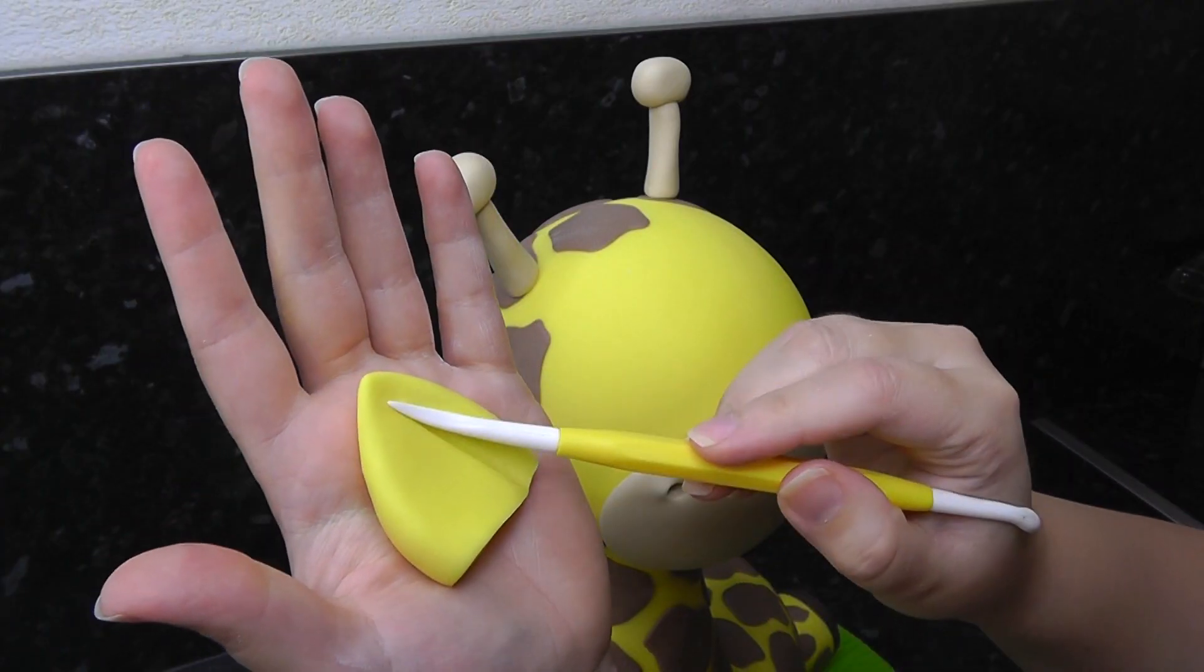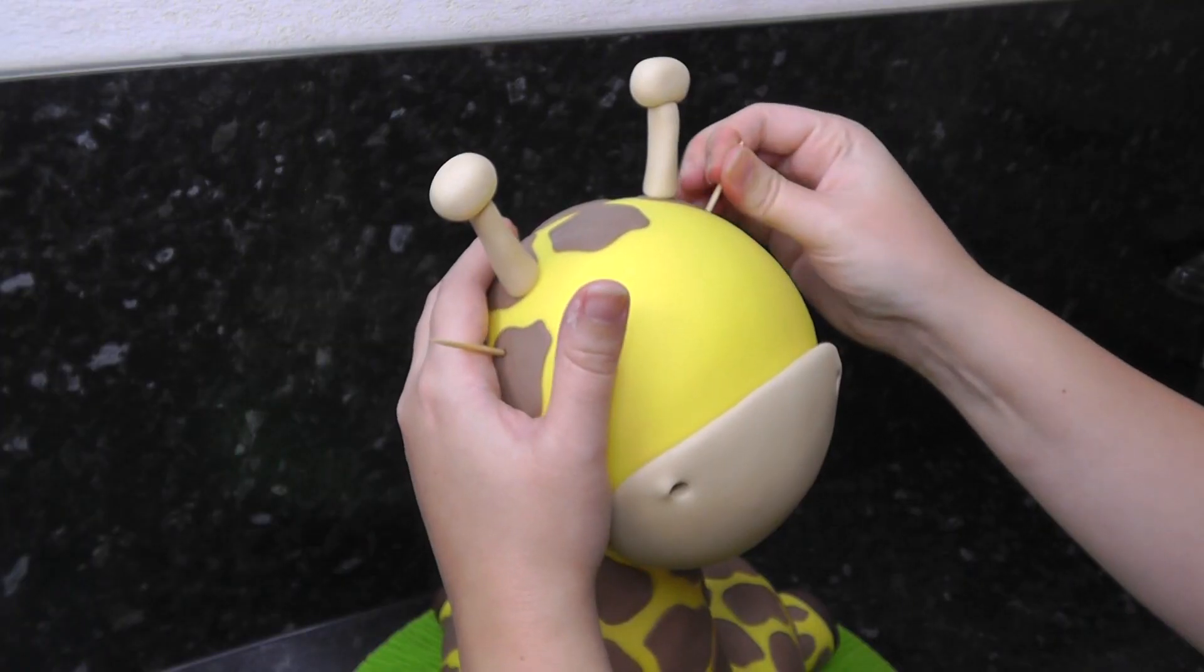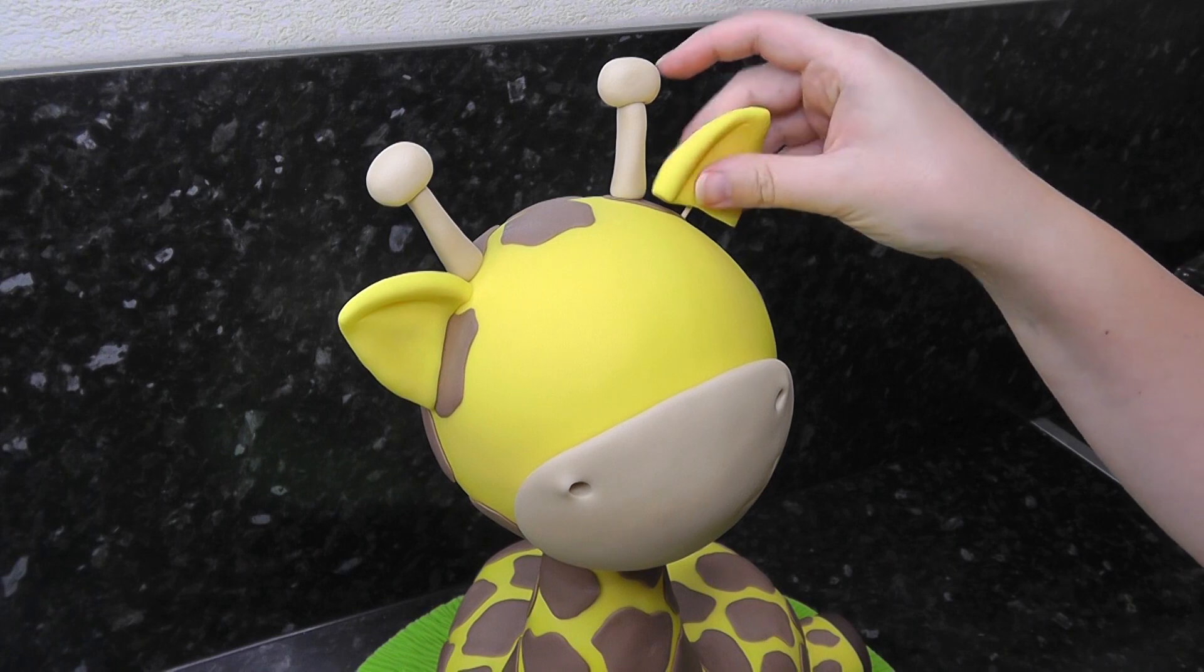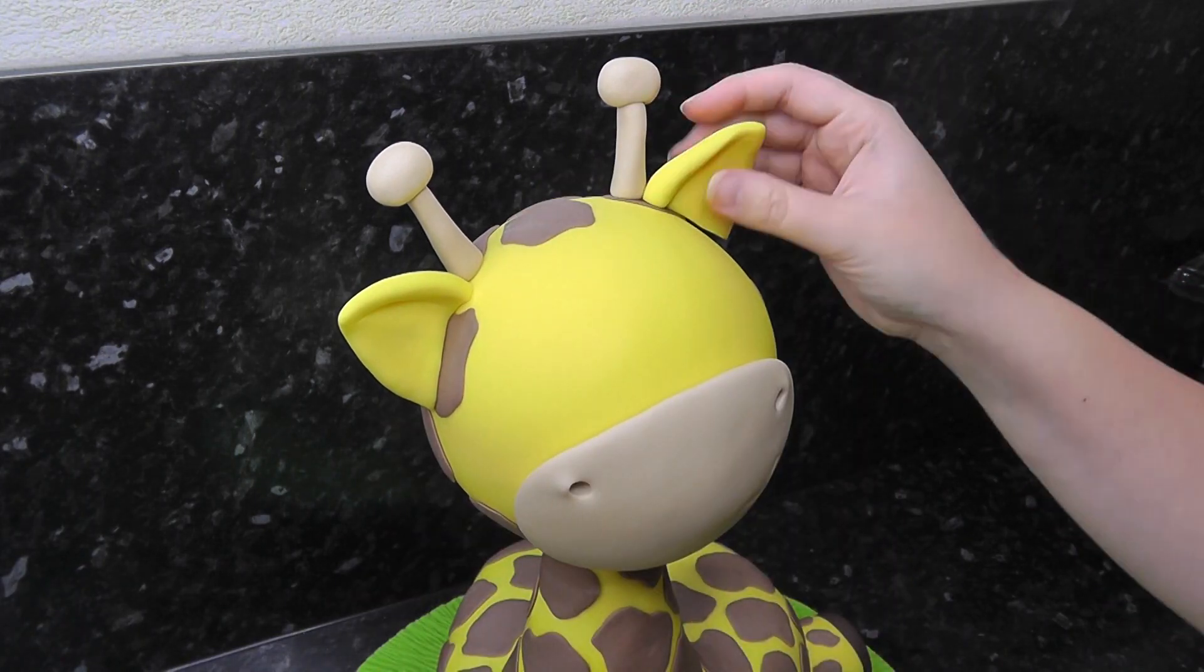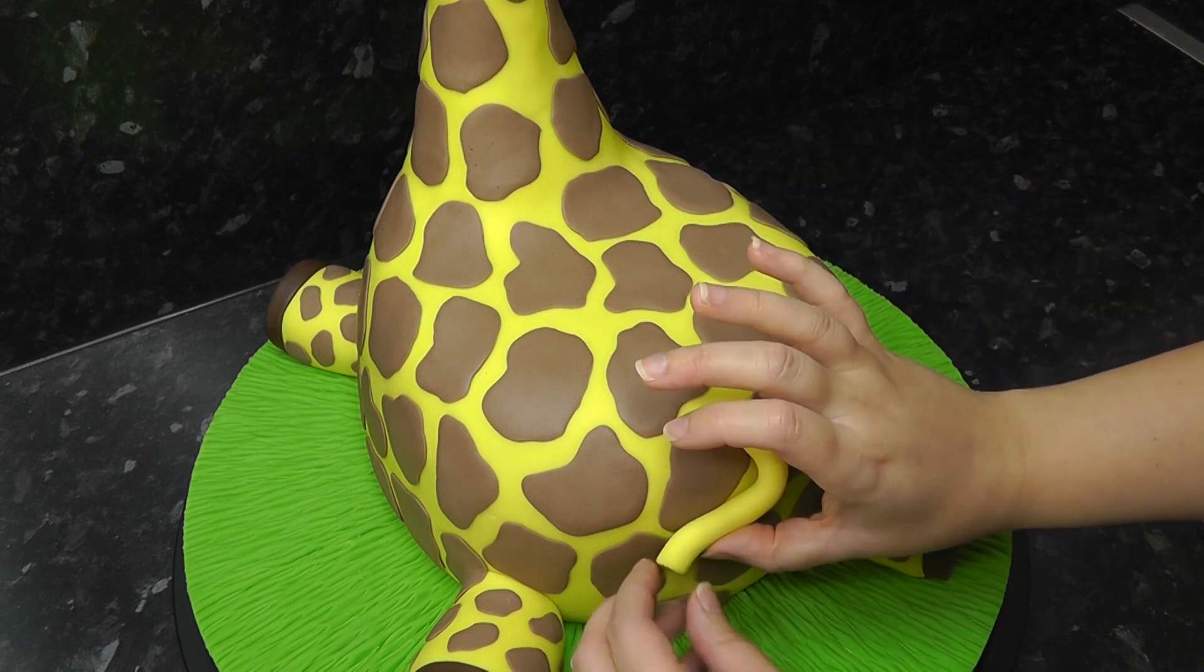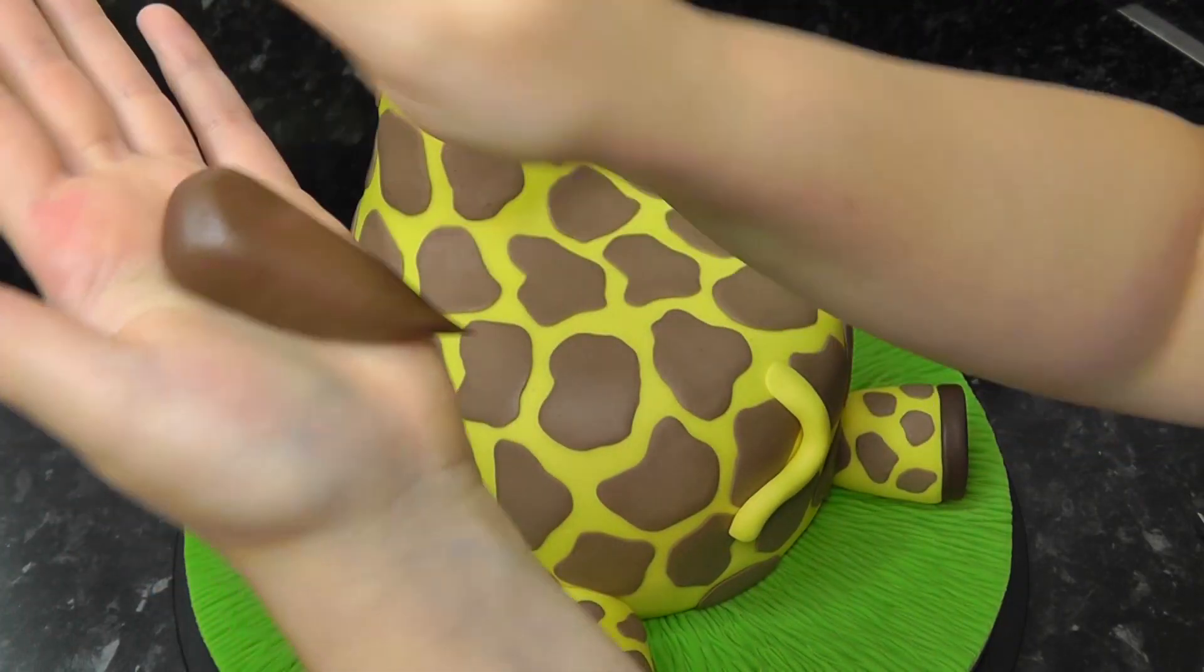The details are all made from sugar paste and simply stuck to the head with water. The tail is a small yellow sausage with some chocolate brown paste teased into a little tuft of hair.